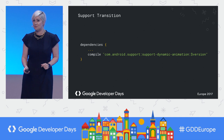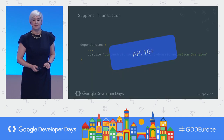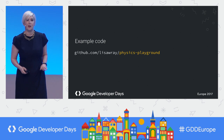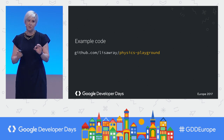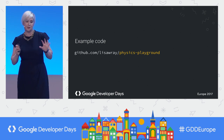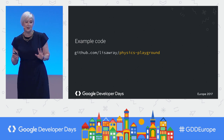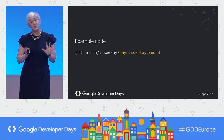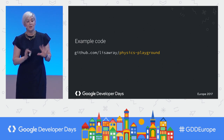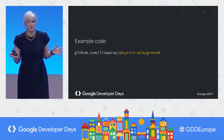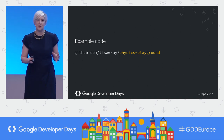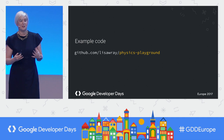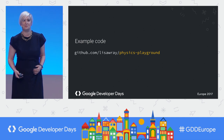These APIs are available from Jellybean and above. All the code for every one of these demos is on my GitHub: LisaRae/physics-playground. Physics-based animations are not toys and not just for games. They're way more than bouncing balls — they are a great way to bring natural motion and interaction to your current UI. I look forward to seeing what you make with them.